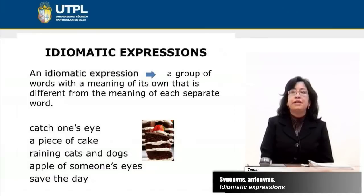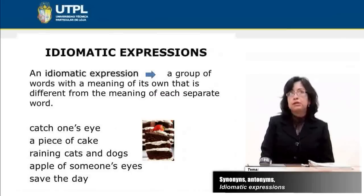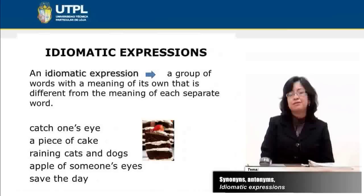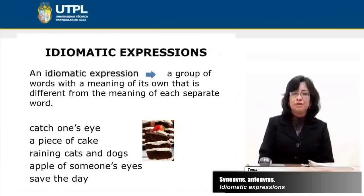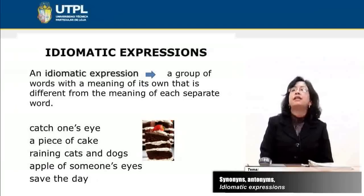We are also going to talk about idiomatic expressions. First of all, let's review what an idiomatic expression is. It is a group of words with a meaning of its own, which is very different to the individual meaning of each separate word. In the examples we have: catch one's eye, a piece of cake, raining cats and dogs, apple of someone's eye, and save the day.